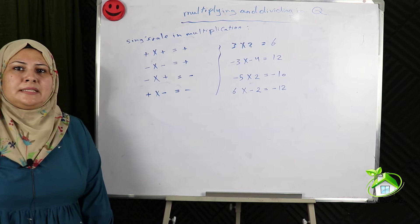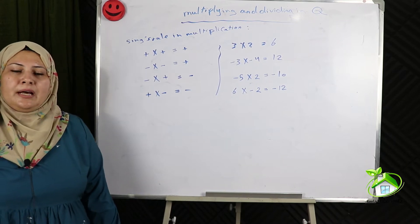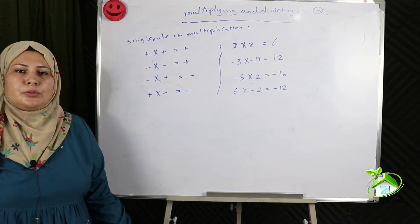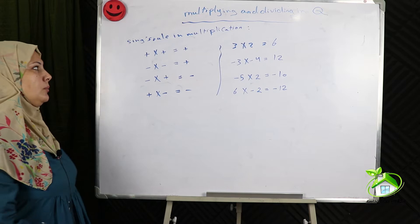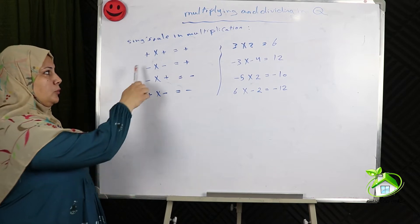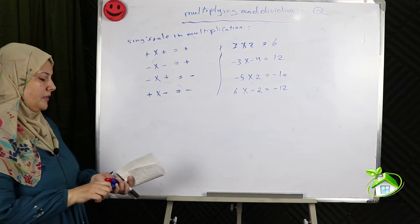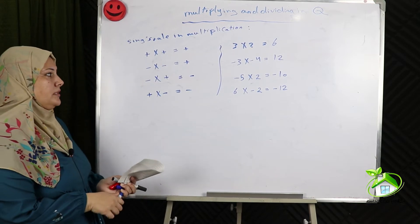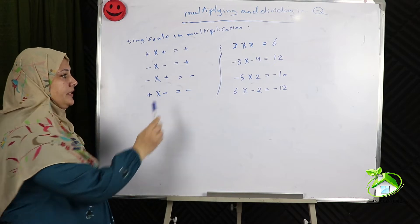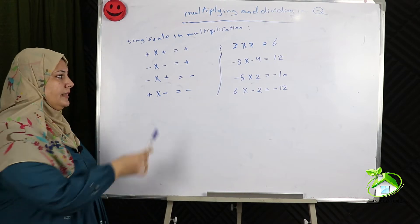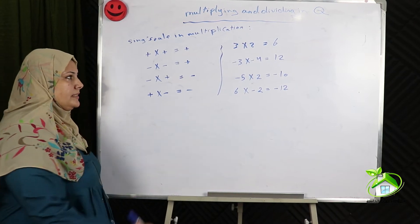Before studying the concept of multiplication, we have to know the sign rule in multiplication. Positive times positive equals positive. Negative times negative equals positive. Negative times positive equals negative. Positive times negative equals negative.